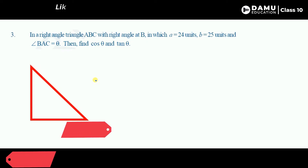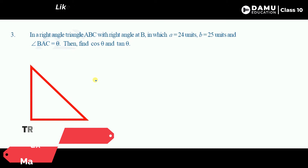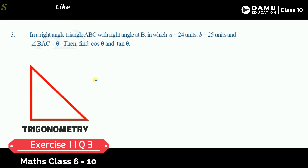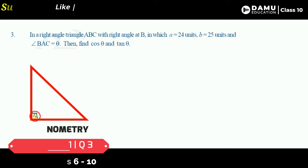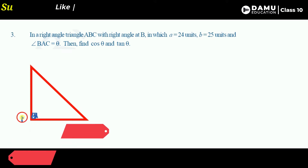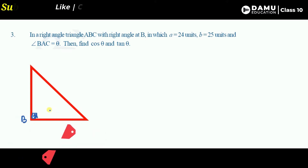Welcome to Dhammo Education. If you haven't subscribed yet, please subscribe and click the bell icon. In this session we are going to discuss our third question: in a right angle triangle ABC with the right angle at B — so the right angle is 90 degrees at B.